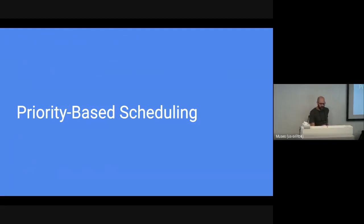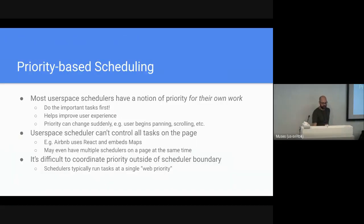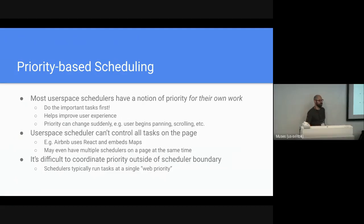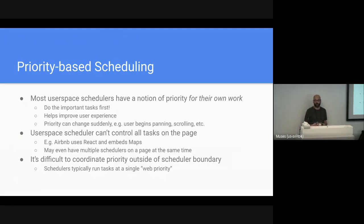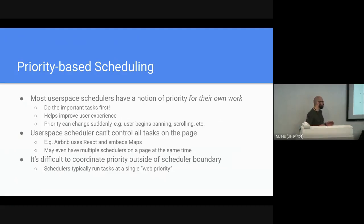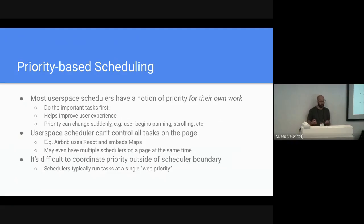The next API we're working on is scheduler.postTask, all about priority-based scheduling. User space schedulers have their own notion of priority — this helps user experience since you want to do things that impact user experience the most first. But they can't control everything on the page. You could have multiple schedulers both trying to do this, and without a shared notion of priority it's really hard for things that want to cooperate to get ordering right. It's also difficult or impossible to communicate that priority outside of the scheduler boundary for other things on the page or within the browser.